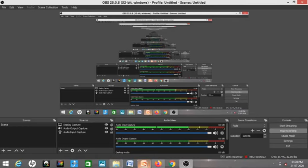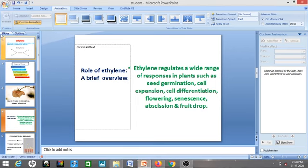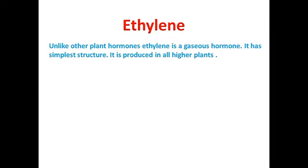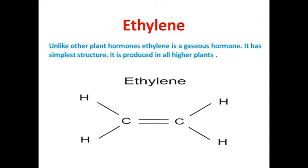Today we are going to study the next phytohormone: ethylene. Unlike the other phytohormones, ethylene is a gaseous hormone — it is the only hormone that is gaseous in nature. It has a very simple structure with a C double bond C and four hydrogen atoms, so the molecular formula is C2H4.